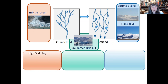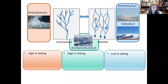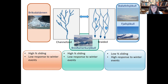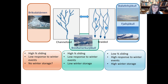These channelized soft-bed systems — Brickdales Breen — have a high percentage of sliding time, which we also found at Breiðamerkurjökull. The other two glaciers have far less time with sliding and more time with deformation. The channelized system has low response to winter events, while we have high response to winter events at the braided systems — because presumably at Brickdales Breen there's no winter storage, and low winter storage at Breiðamerkurjökull, but very high winter storage at the others.